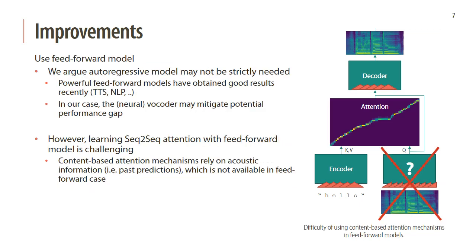The second improvement is to use a feed-forward model instead of an autoregressive model. We argue that such a model should also obtain good results, given recent publications in text-to-speech and natural language processing where powerful feed-forward models have matched or even exceeded autoregressive models. Also, since our timbre model is followed by a waveform generator such as a neural vocoder, any potential performance gap may be mitigated. However, learning sequence-to-sequence attention with feed-forward is quite challenging, mainly because we cannot use a content-based attention mechanism, as these rely on acoustic information not available in the feed-forward case.